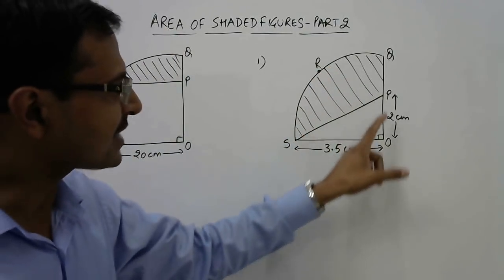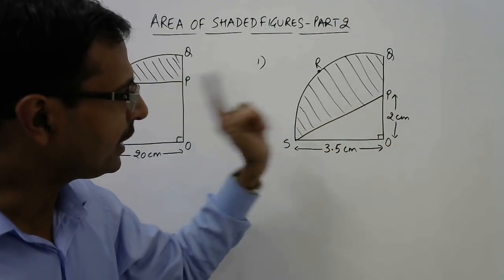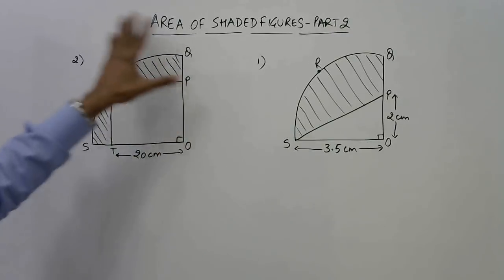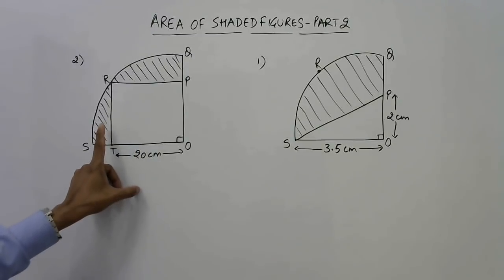Now here we have inscribed a right angle triangle in this quadrant and we have to find the area of this shaded portion. Similarly, in this second figure we have a quadrant and we have inscribed a square in this, and the remaining shaded portion is to be found out.